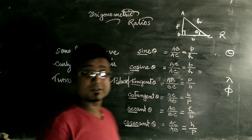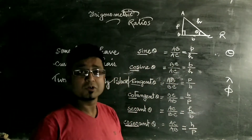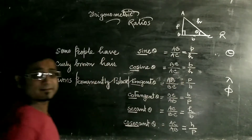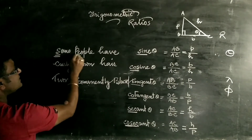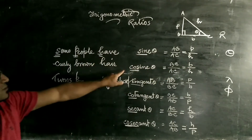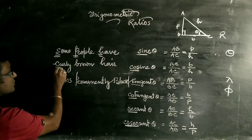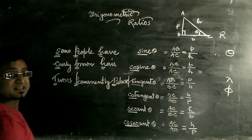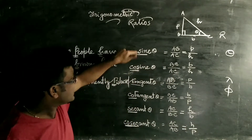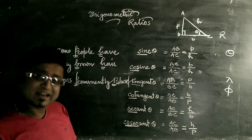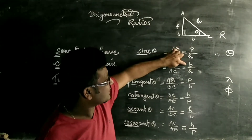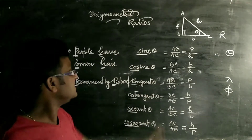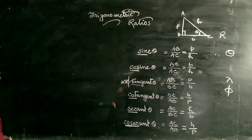I'm going to show you a trick to remember these ratios very simply. Just see: sine theta is P by H — 'Some People Have'. Cosine theta is B by H — 'Curly Brown Hair'. Tan theta is P by B — 'Turns Permanently Black'. Once you know sine, cos, and tan, just take their reciprocals to find cosec, sec, and cot.